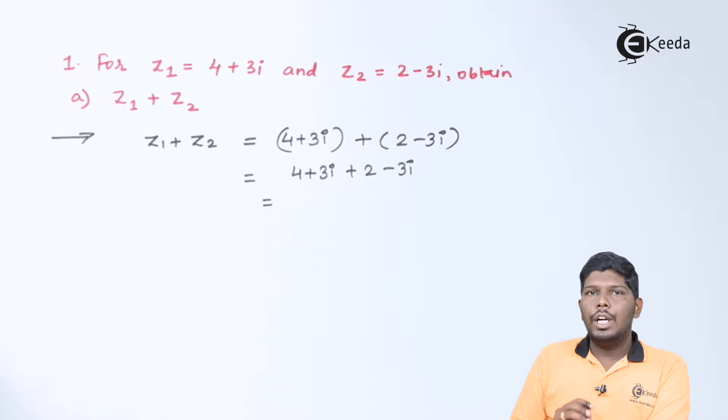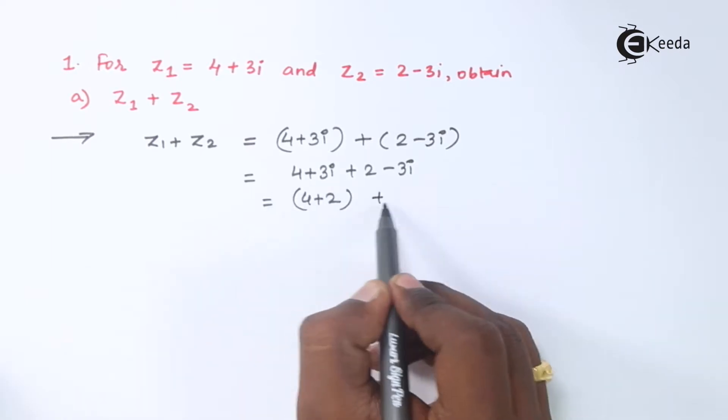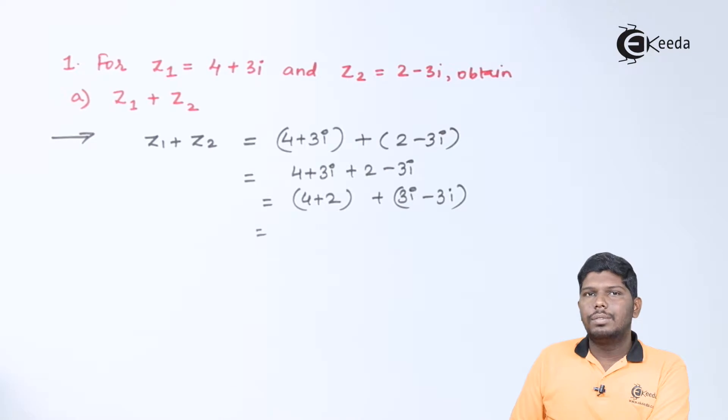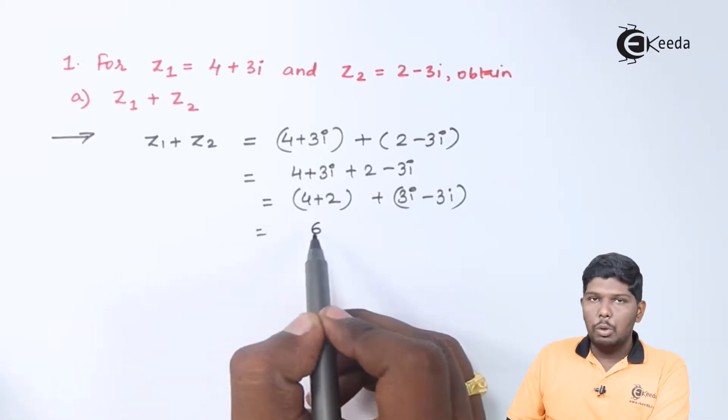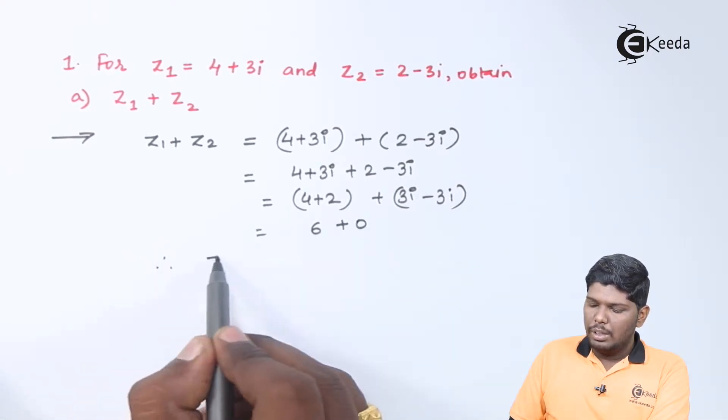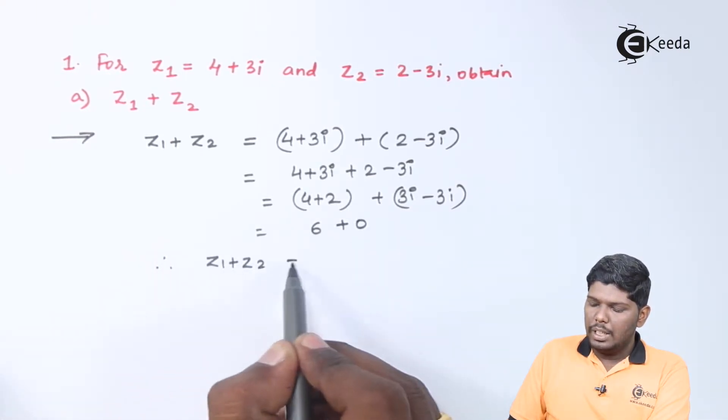After that, we need to arrange real terms first and imaginary terms followed by it. We have 4 plus 2 as real and plus 3i minus 3i as imaginary. 4 plus 2 will give you 6 and 3i minus 3i will give you 0. Therefore, z1 plus z2 is equal to 6.